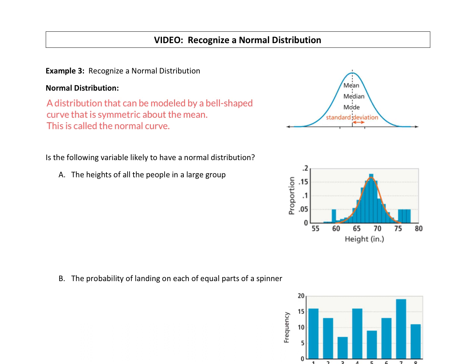So let's take a look at when we can recognize that. Is the following variable likely to have a normal distribution? Is it bell-shaped? Is it a bell-shaped curve? Is it symmetric about the mean? Those are the things we're looking for.